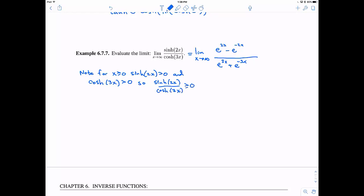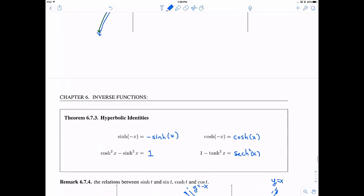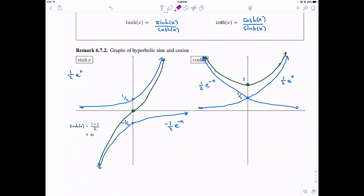So therefore, when you divide hyperbolic sine of 2x divided by hyperbolic cosine of 3x, this is going to be greater than or equal to 0. Right? And again, that's because these pieces, when you have x greater than or equal to 0, they're both positive. Okay?